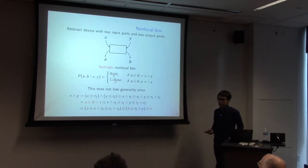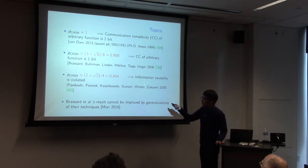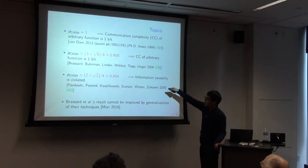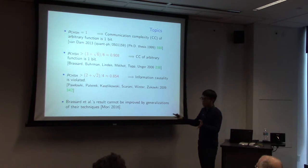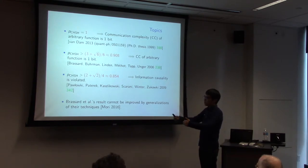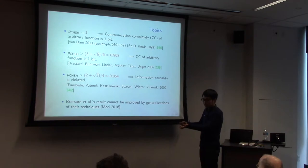I was interested in Brassard et al.'s result on communication complexity and wanted to improve the threshold to the quantum limit, but I couldn't. I showed that this threshold cannot be improved by generalization of their technique. Between the two thresholds, it is not obvious whether communication complexity is 1 or not. The situation is classical, but they can use a black box — an abstract device with larger CHSH probability than the quantum limit, like 0.908. I asked: in this setting, what is the communication complexity?